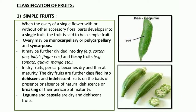Coming to the types or classification of fruits. First is the simple fruit. When the ovary of a single flower, with or without other accessory floral parts, develops into a single fruit, it is called a simple fruit. The ovary may be monocarpellary or polycarpellary, and syncarpous — all carpels are fused. When only the ovary develops into fruit and no other parts are involved, it is called a simple fruit. It may be further divided into two types: dry fruits and fleshy fruits.